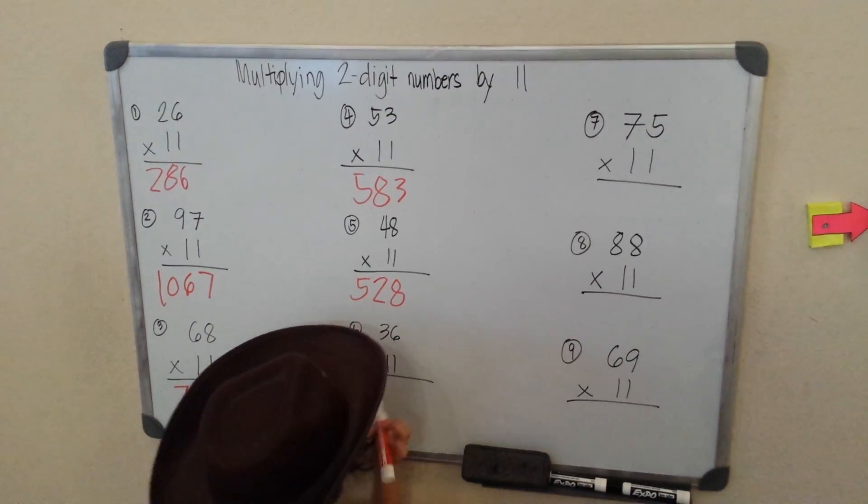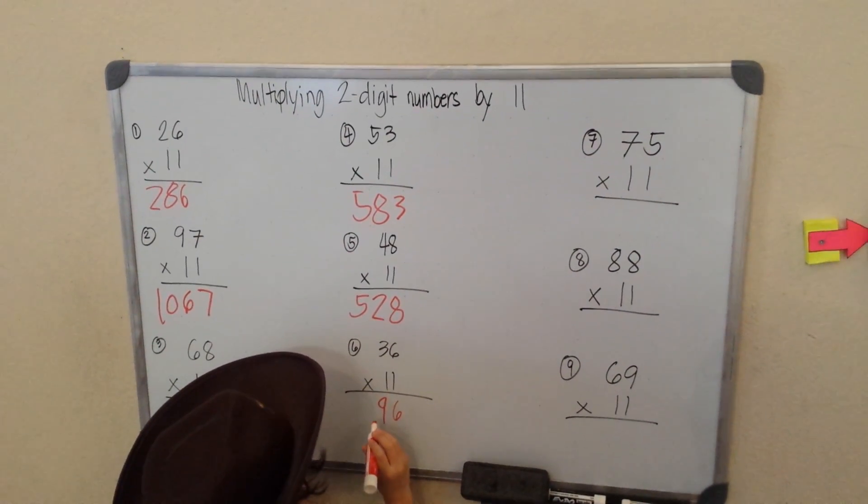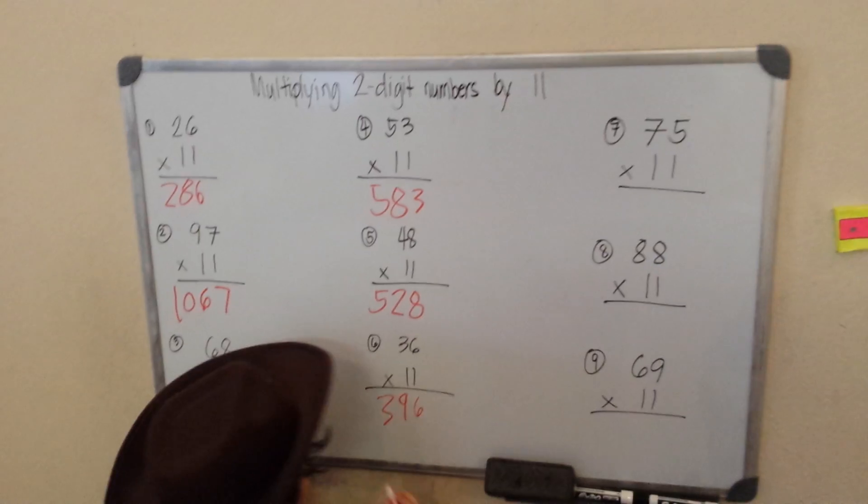Okay. Copy the 6. 3 plus 6, 9. And then copy the 3. 396.